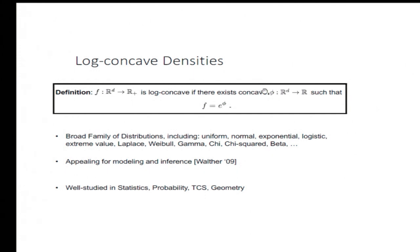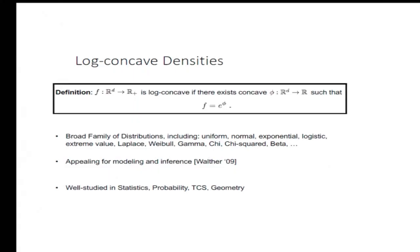The family we're focusing on is the family of log-concave densities. The word really reveals it: it's a distribution whose density is of the form exponential to the phi, where phi is concave. This is a non-parametric family that generalizes many familiar families of distributions like Gaussian, exponential, etc. It's much more flexible than assuming your data comes from a parametric family, so it can model more complicated things.